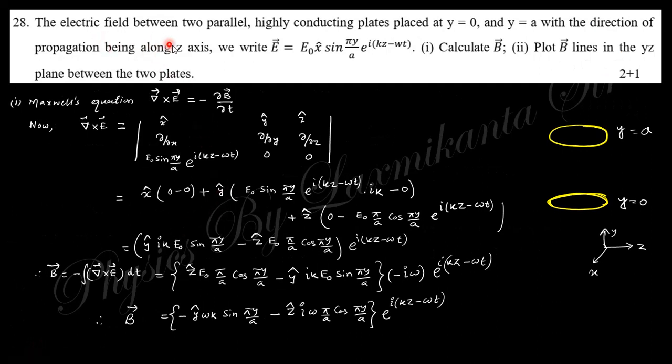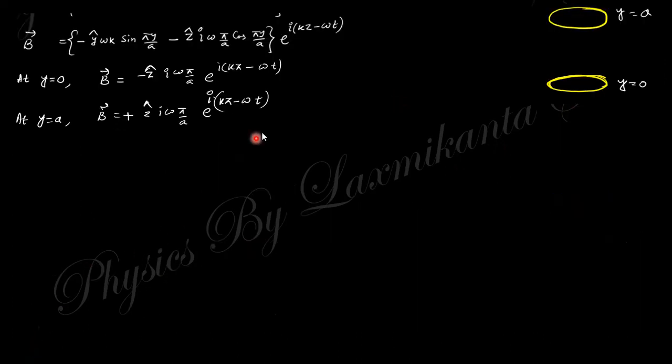Next: The electric field is like that. Find the magnetic field. We have the Maxwell equation curl E equals dB/dt. Taking the curl of the electric field and integrating with respect to time will give this magnetic field expression.